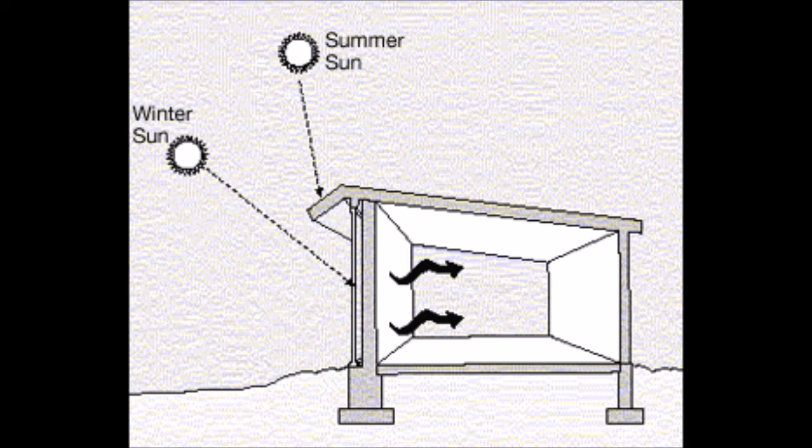In reality, Trombe walls can be built to whatever height suits the needs of the homeowner, their reduced height simply reducing the solar absorption area and increasing direct light and heat gain area.